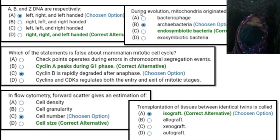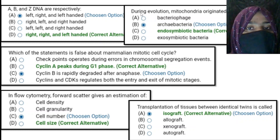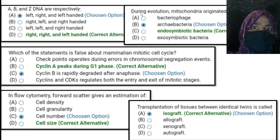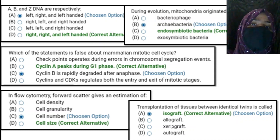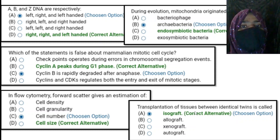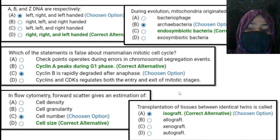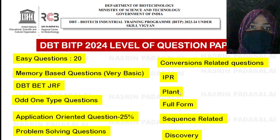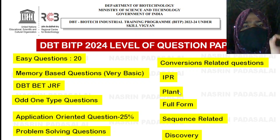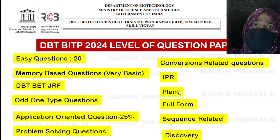Another example: during evolution, mitochondria originated from endosymbiosis. These are things we study in 12th standard itself. Similarly, transplantation of tissues between identical twins is called isograft — this is already taught in 10th standard. Definitely 20 questions will be at a very easy level, and of course there will be many memory-based questions asked.